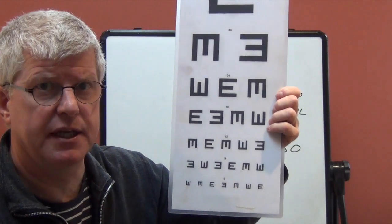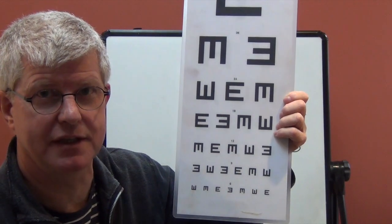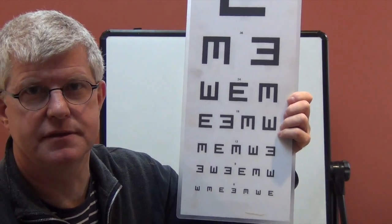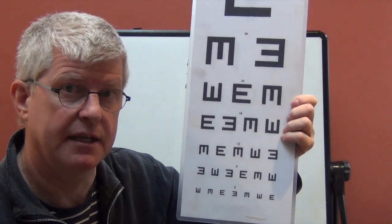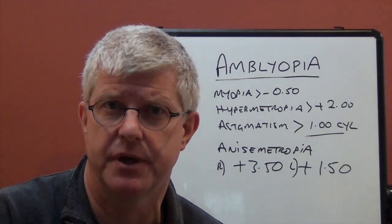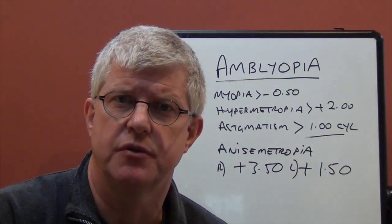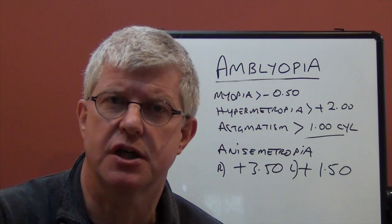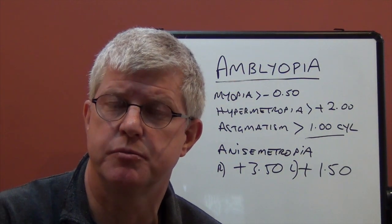So just bear in mind that amblyopia cannot be corrected after a certain point. So it's really important that we do examine children as early as possible to try and pick up on refractive error and get it corrected as soon as possible to prevent amblyopia from setting in, which will result in a permanent loss of visual acuity. So just to recap, to prevent amblyopia, then we need to really correct any refractive error in a child as early as possible, before the age of 5.